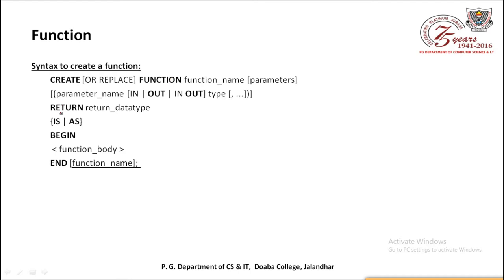After the parameter list, we specify RETURN followed by the return data type. Then IS or AS is used - AS is used for standalone functions, otherwise IS is used. Then the BEGIN section follows containing the function body.